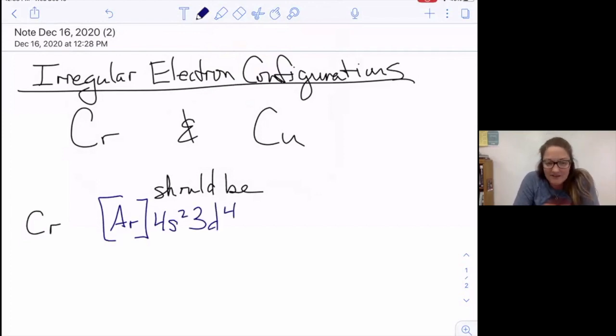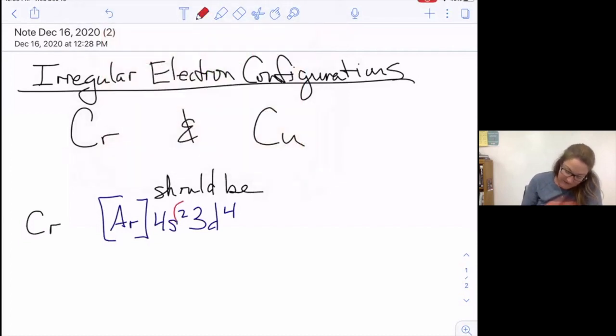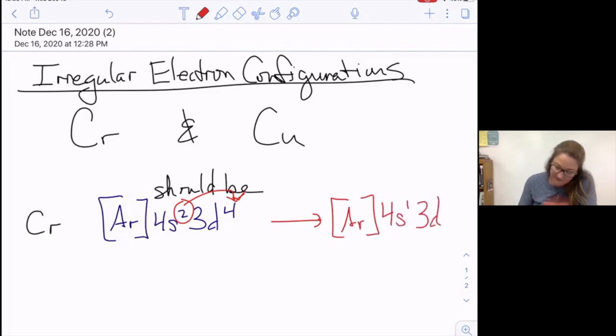But what happens here instead is one of the electrons from this subshell gets sent to that subshell because there's an enhanced stability with a half full or completely full d subshell. So as a result, this electron configuration becomes argon 4s1 3d5.